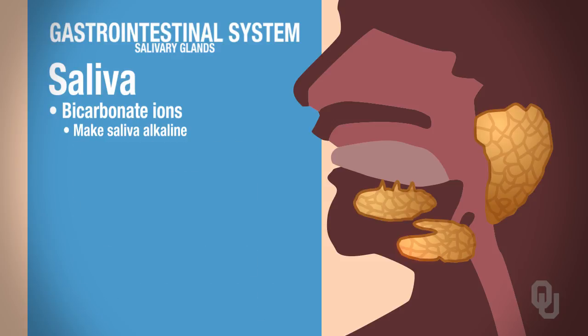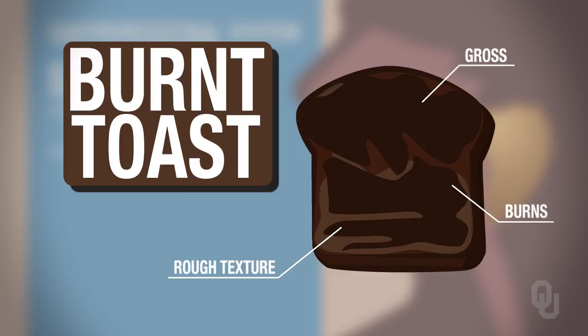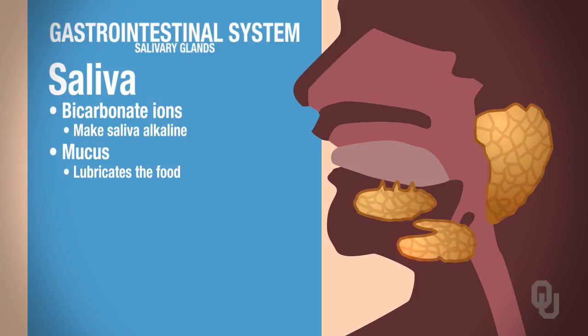The saliva also contains mucus. The mucus lubricates the food, because when you chew or masticate your food, you don't want to cause abrasions in the lining of your mouth. For example, if you've eaten some toast that you've over-toasted and it's practically burnt, it forms those abrasions or that rough texture in the roof of your mouth, and it's pretty sore for a few days. The mucus is there to help protect against things like that happening.